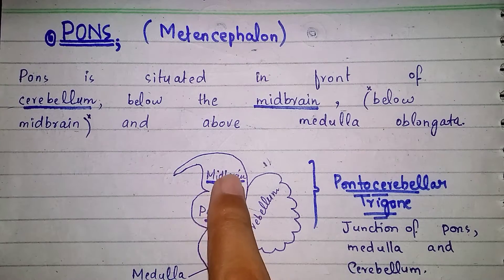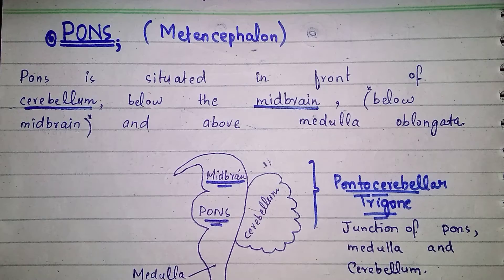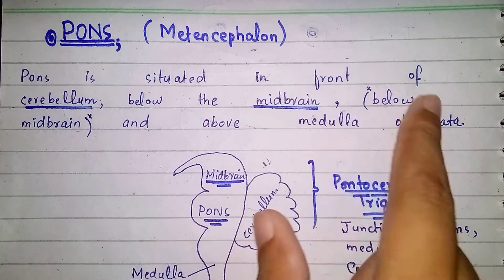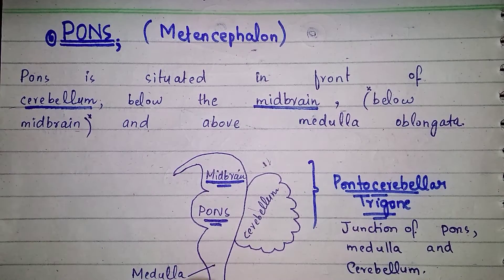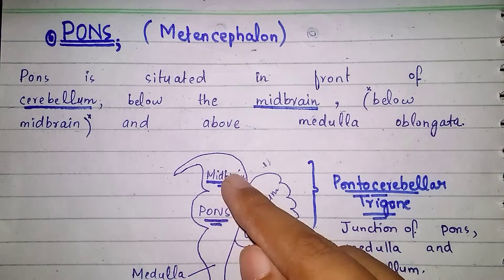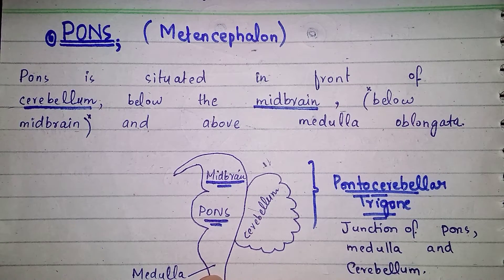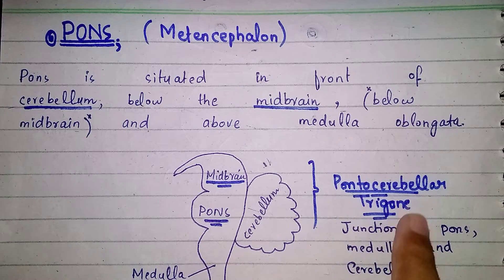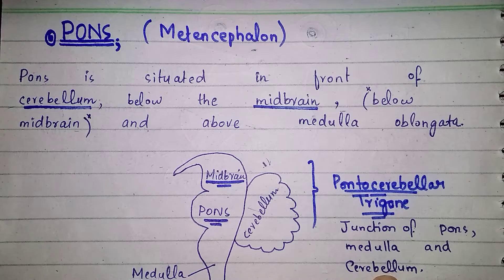Today we are going to discuss PONS. First, we will discuss the location of PONS. PONS is situated in front of the cerebellum, below the midbrain, and above the medulla oblongata. So we can see that the midbrain is directly above PONS, the medulla oblongata is below PONS, and the cerebellum is present in front of it. PONS is a junction of the pons, medulla, and cerebellum.